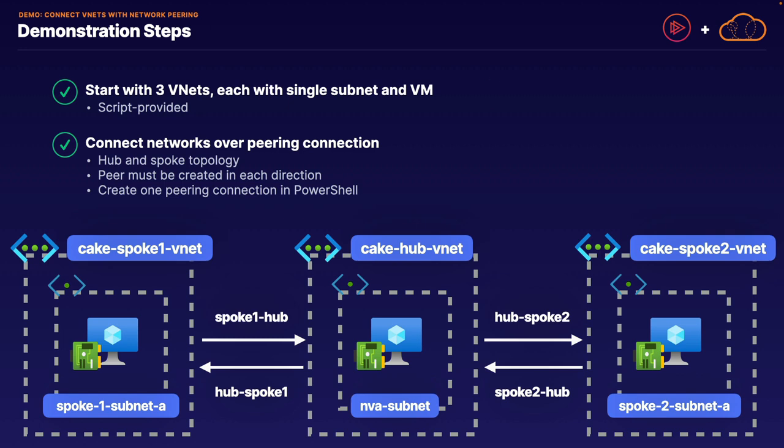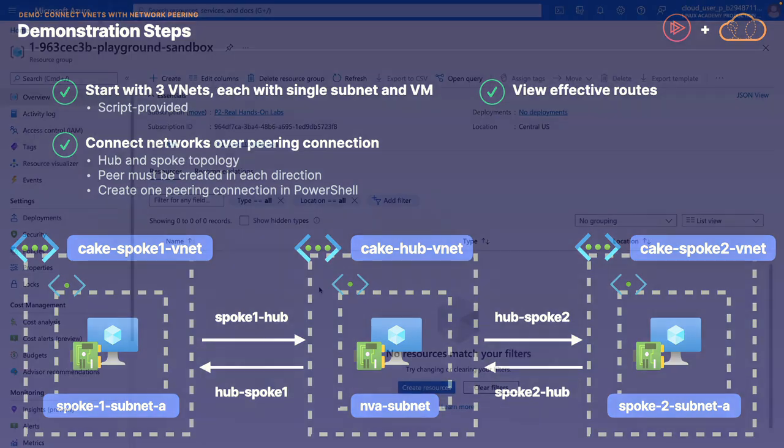Once we are done with our peerings, we are then going to view the effective routes for the virtual machines in our peering setup, looking at both the machines in our hub virtual network and our spoke virtual network, and we'll take a look at the differences between the two. With that, let's jump over to our Azure environment and get started.